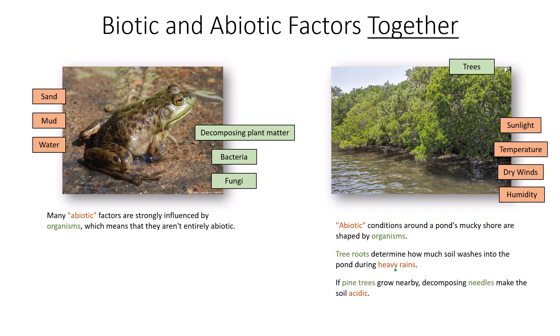Abiotic factors can also impact biotic ones. If pine trees grow nearby, decomposing needles make the soil more acidic, dropping the pH. Decomposing oak leaves make the soil more alkaline. So a pond near pine trees will be more acidic, while one near an oak grove will be more alkaline. Both acidic and alkaline conditions are abiotic factors strongly influenced by the trees — the biotic factor. That's it for this quick video on biotic and abiotic factors. Bring questions to class or drop them in the comments!